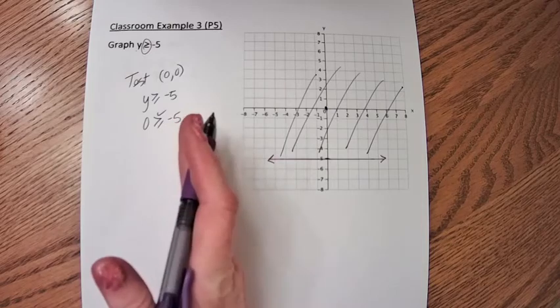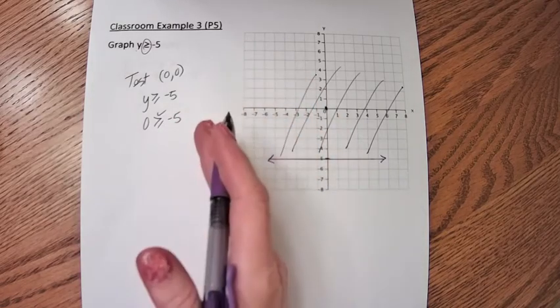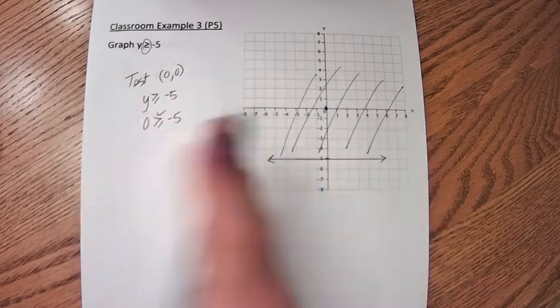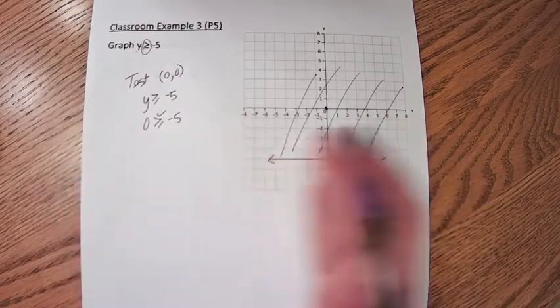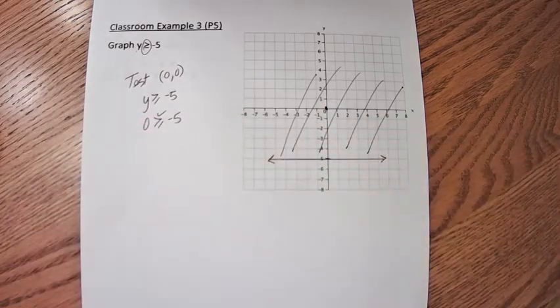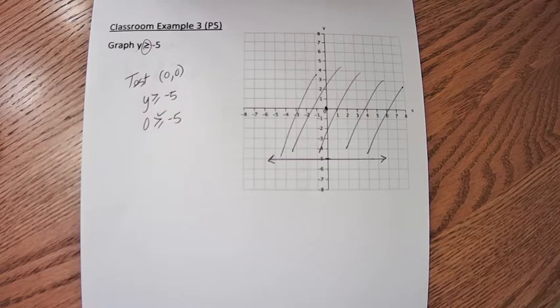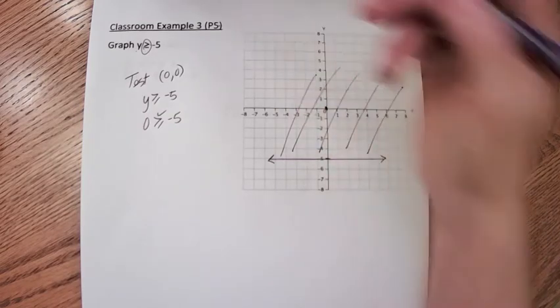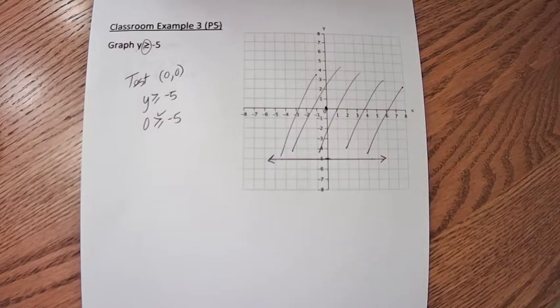If I had x greater than or equal, we'd have a vertical line and you'd have to decide: are you going to shade on the left or the right? The bigger x's or the smaller x's. So why don't you go ahead and try practice 5.